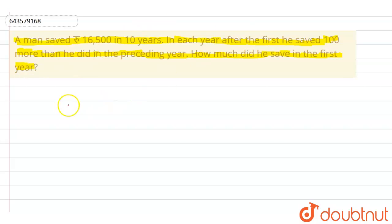In this question, we're given that a man saved ₹16,500 in 10 years, and each year after the first he saved ₹100 more than the preceding year. We need to find how much he saved in the first year.